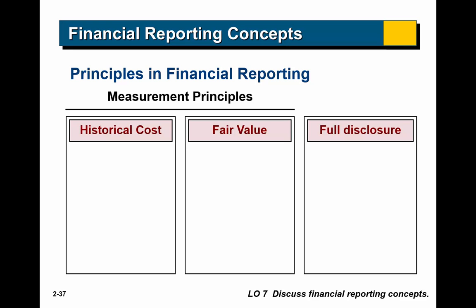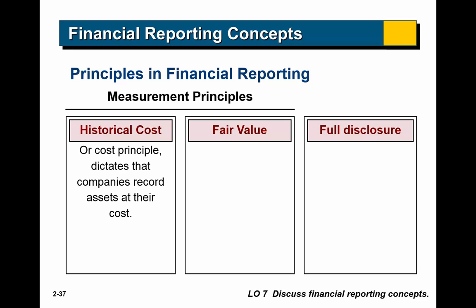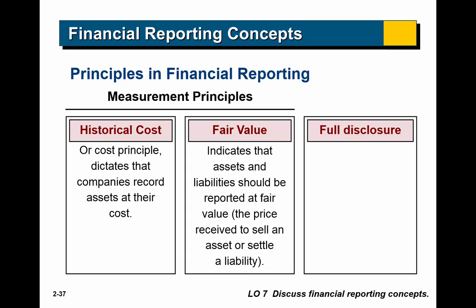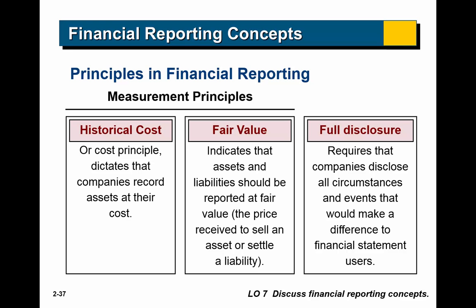These are the measurement principles. When dealing with assets, we typically record them at their historical cost — what they cost to acquire. Certain assets are recorded at fair value — what they're worth on the market. This usually applies to assets where we have a clear understanding of fair market value: for example, publicly traded stock in another company, where we can look up the price and multiply by shares held. But a 1978 delivery truck may be very hard to value, so we typically list it at historical cost. Full disclosure requires that we disclose all information necessary for users of financial statements to make reasonable decisions.